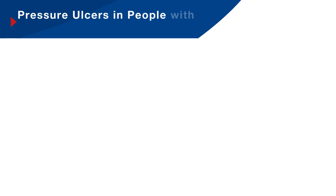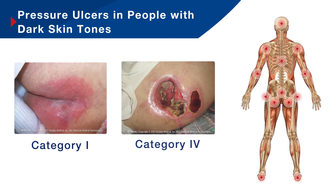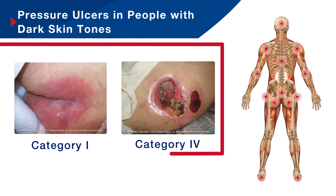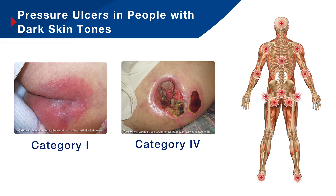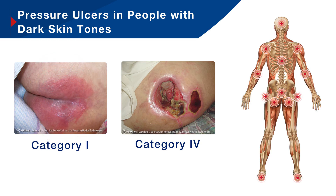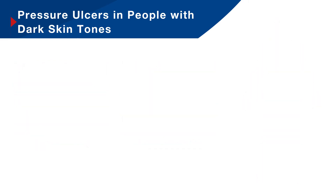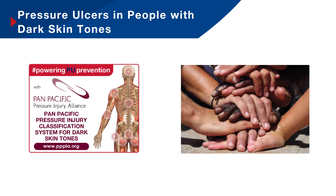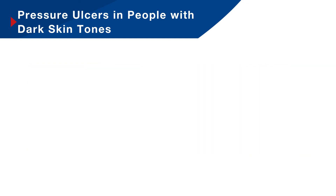Looking through each of these categories, it is clear that early detection of pressure-related skin damage is vital as it allows for appropriate intervention, which can prevent progression to more severe injuries. Therefore, the ability to accurately identify and confirm a category one pressure ulcer in all skin types is of significant importance. Healthcare professionals and carers are typically taught to look for redness or erythema as a first sign of pressure damage, and whilst this is relatively simple to identify in Caucasian skin, it can prove difficult to diagnose accurately when assessing individuals with darker skin tones.